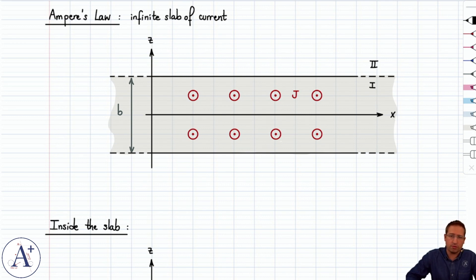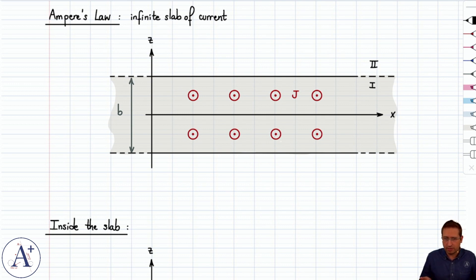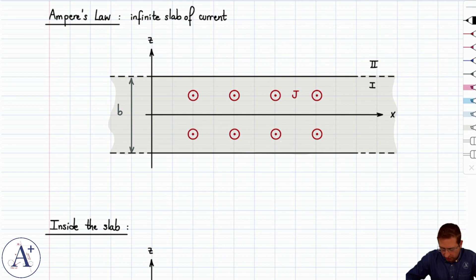The question is, how do we apply Ampere's law? In other words, what contour do we choose — a circle or a rectangle? That depends on the shape of the magnetic field lines, so let's figure out what they look like.